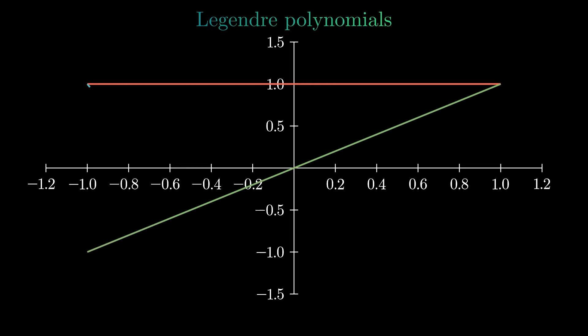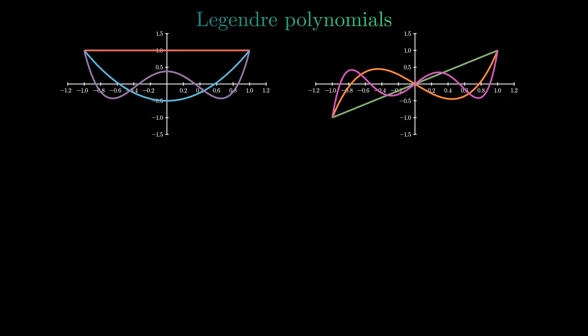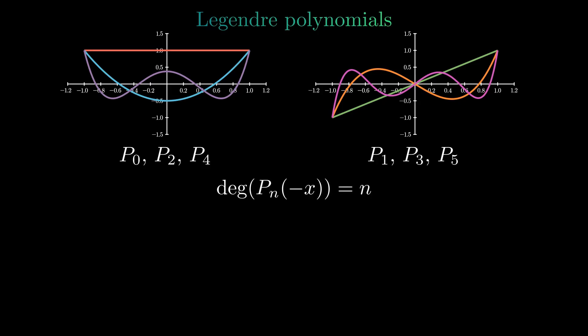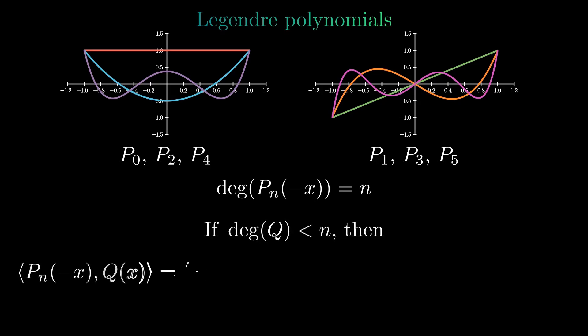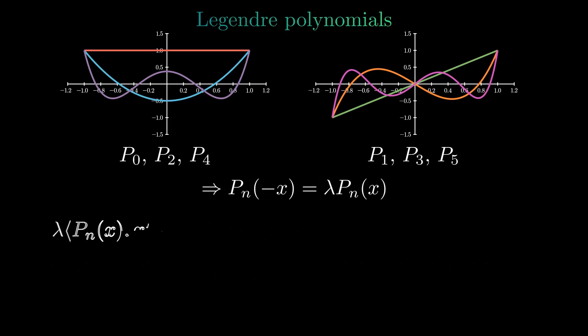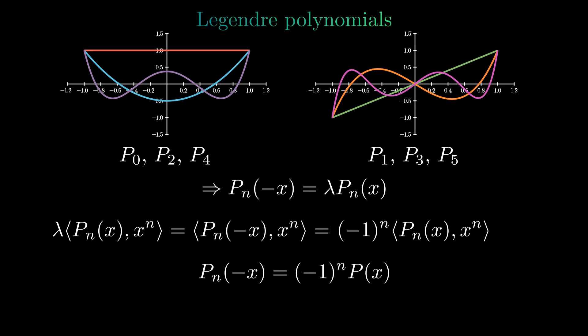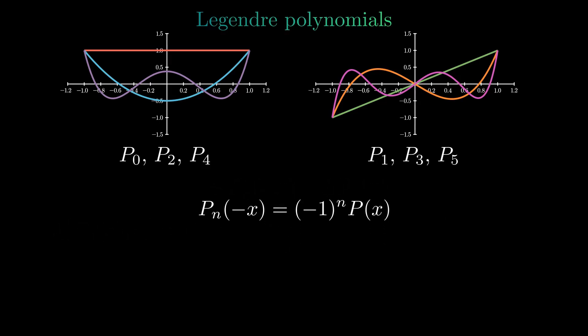Let's plot the first few Legendre polynomials. We can see that the Legendre polynomials with even degree are even functions and the ones with odd degree are odd functions. We can also easily prove this property. Consider pn of minus x — this is again a polynomial of the same degree. If we look at the inner product with any polynomial of lower degree, we can use integration by substitution to get an inner product with pn, which is equal to zero. Since pn is unique up to a multiple with these properties, pn of minus x must be a multiple of pn. Looking at the inner product with x to the nth power, we get that lambda is minus 1 to the nth power, which proves the parity result.